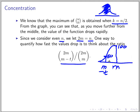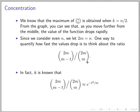We look at the ratio when the function is at M minus T compared to the function at the middle M. It is known — we don't need to derive it — that this behaves like E to the minus T squared over M. So this is how it drops. But we'll prove something close to this pretty soon.